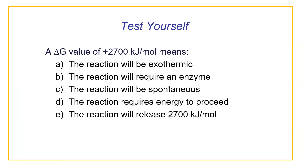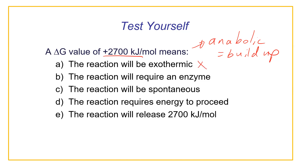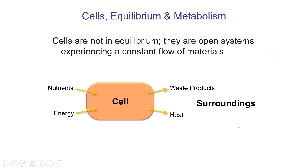Test question: if delta G equals positive 2,700 kilojoules per mole, what does this mean? Positive delta G means an anabolic, endergonic reaction — energy must be absorbed. 'Exothermic' is wrong because that means releasing energy. 'Requires an enzyme' isn't directly relevant here. 'Spontaneous' is wrong because this reaction requires energy. The correct answer is D: the reaction requires energy to proceed. 'Releases 2,700 kJ/mol' is the opposite of what a positive delta G means.